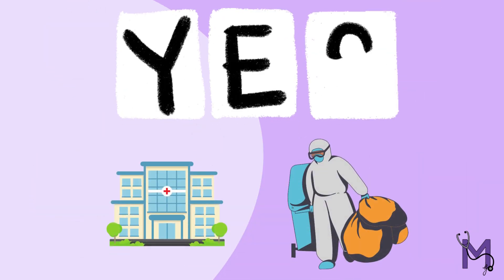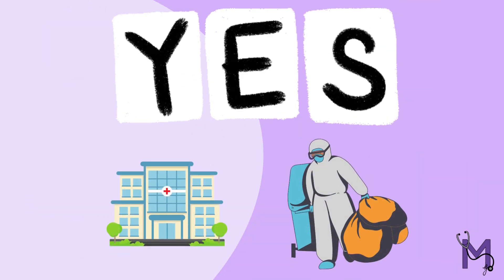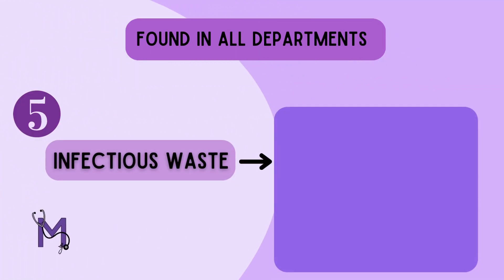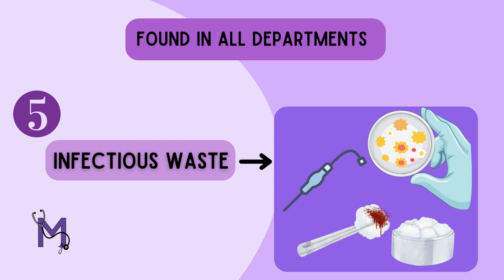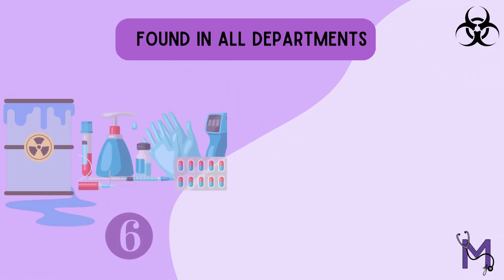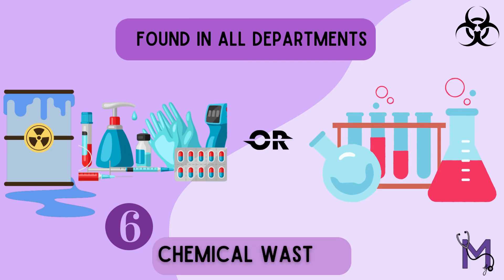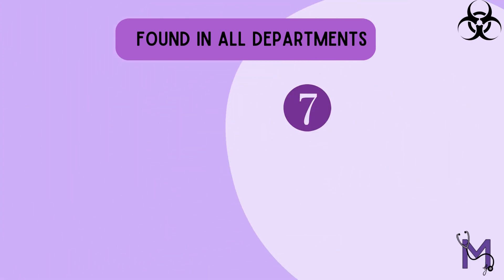There is also waste common to all departments, and there are three main categories here. First is infectious waste, which could include lab cultures or any equipment that has come in contact with infected patients — like suction tubes, used cotton, and so on. Any kind of disinfectant or lab reagents are categorized as chemical waste.